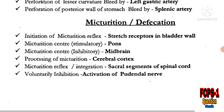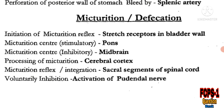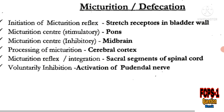MCQs regarding micturition reflex and defecation reflex: initiation of the micturition reflex is caused by stretch receptors in the bladder wall. The micturition center that is stimulatory is present in the pons, the inhibitory center is in the midbrain, and processing of micturition is controlled by the cerebral cortex. Integration of the micturition reflex is controlled by sacral segments of the spinal cord.